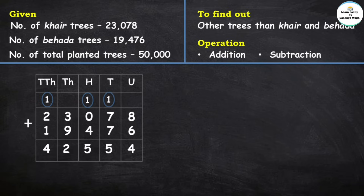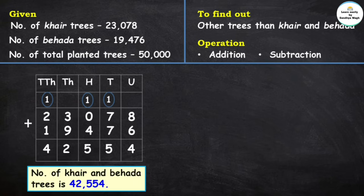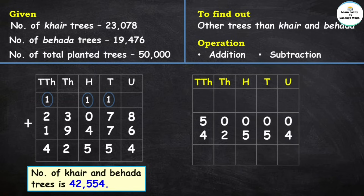The number of kher and bhaida trees together is 42,554. Now we need to subtract this from the total trees. Total trees is 50,000 and kher and bhaida together are 42,554. Let's do the subtraction.